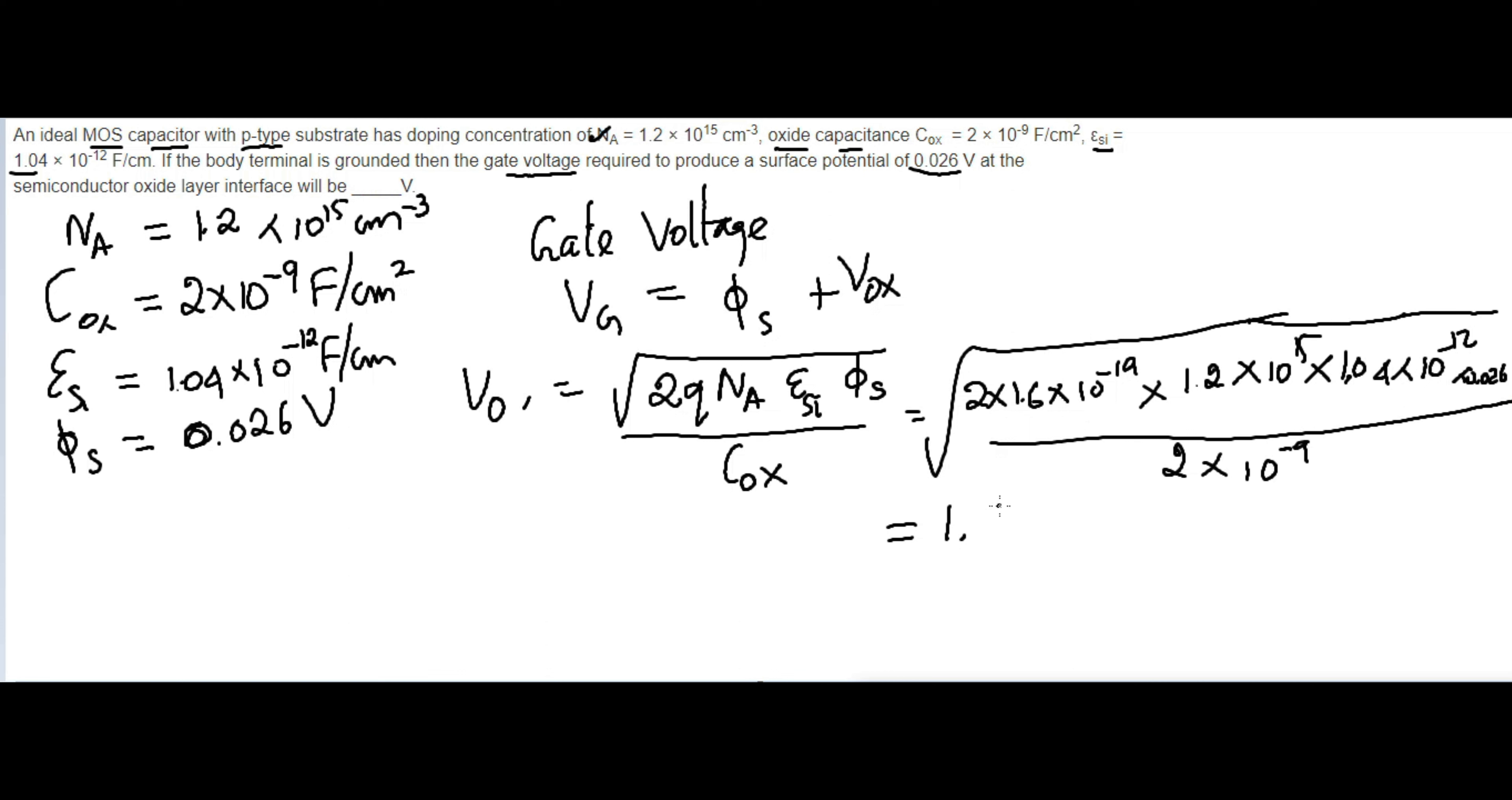If you have any issues with simplification, write in the comment box and I'll help you. Using the calculator, we get 1.611 volts for VOX. So now we've got VOX.